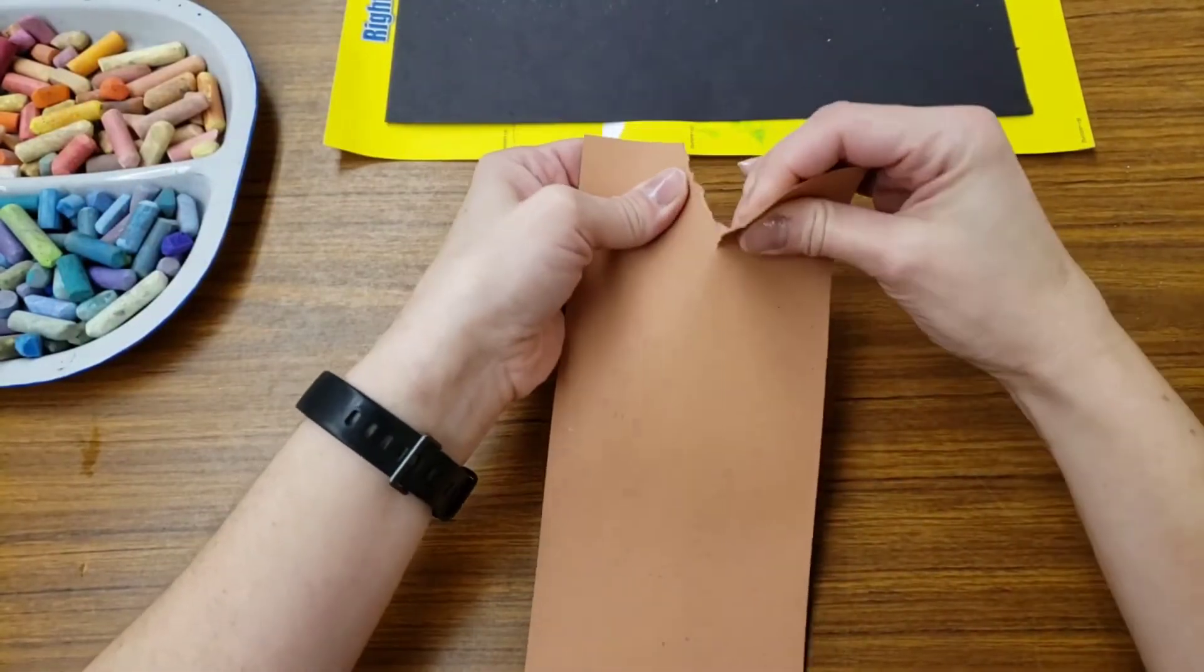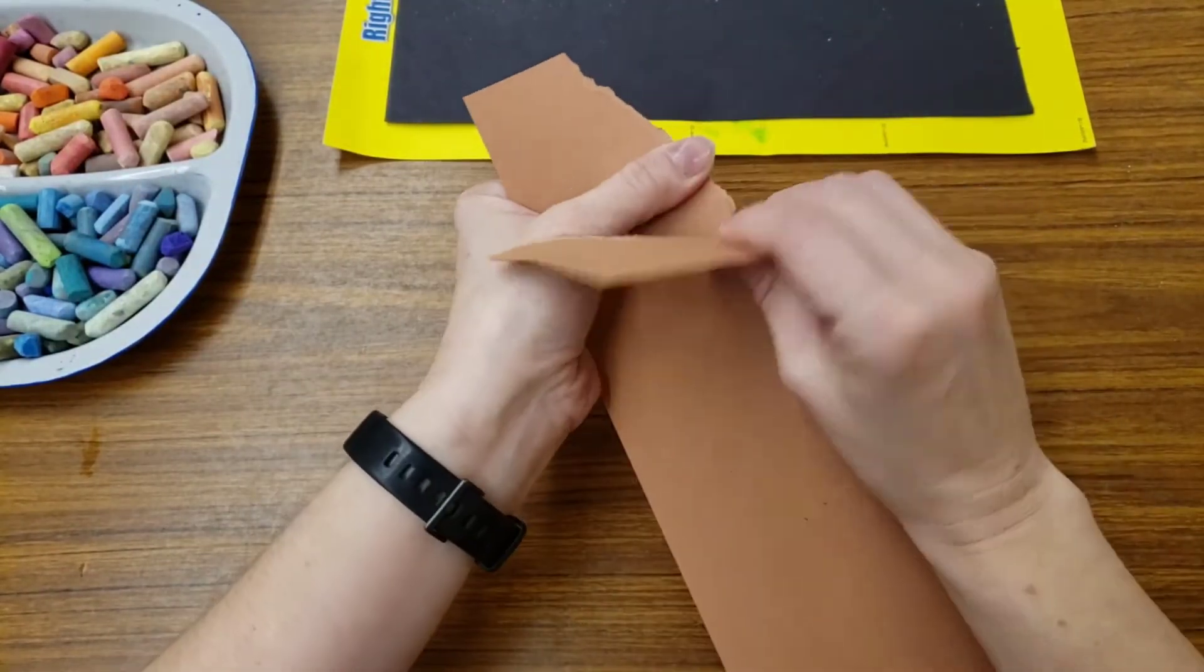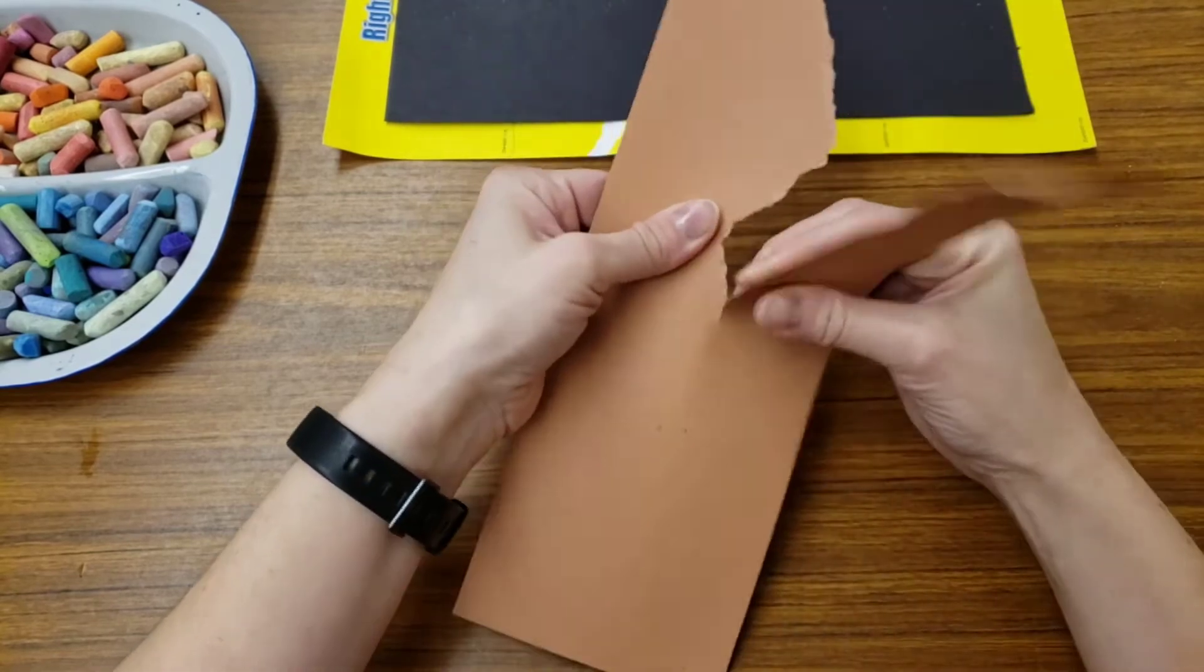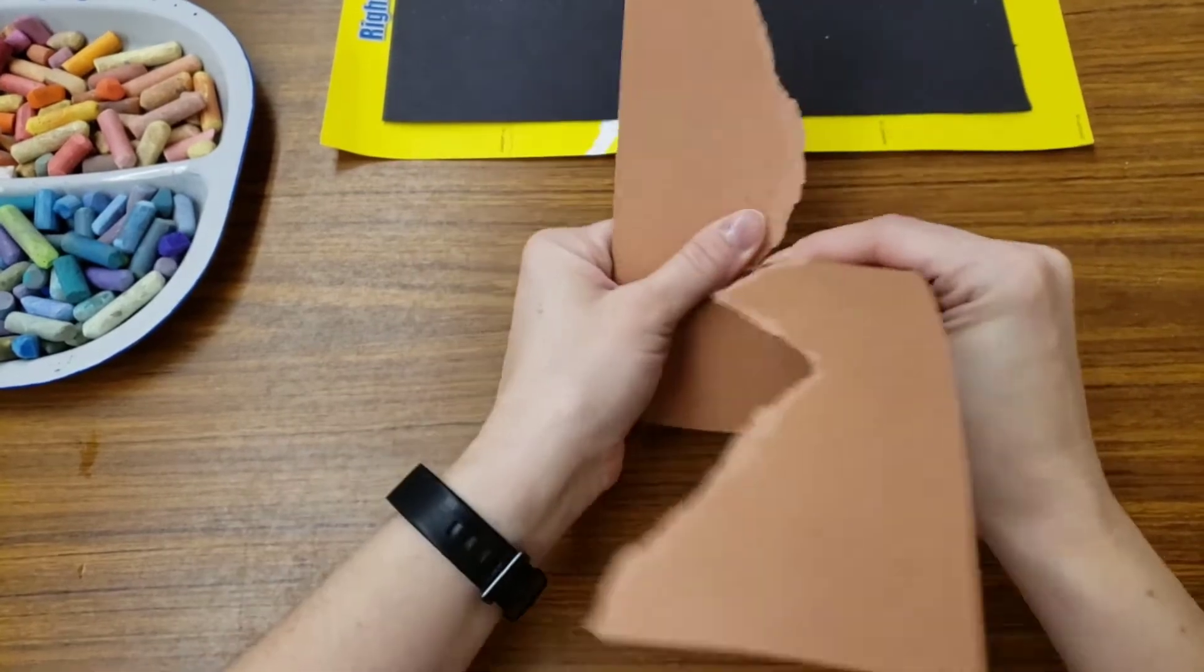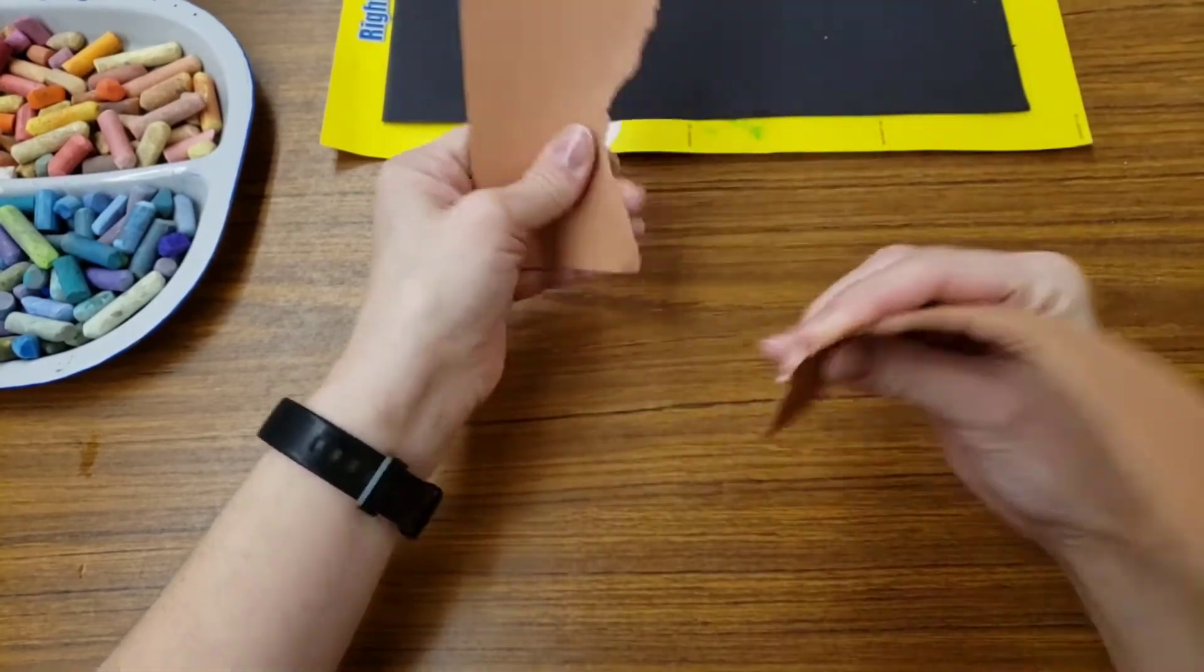We're going to take it, and you're trying to rip it so it has peaks and valleys, or at least so it's curvy. We do not want it in a straight line.